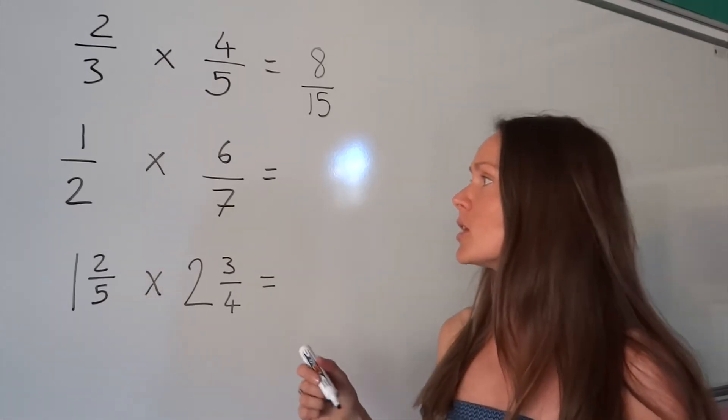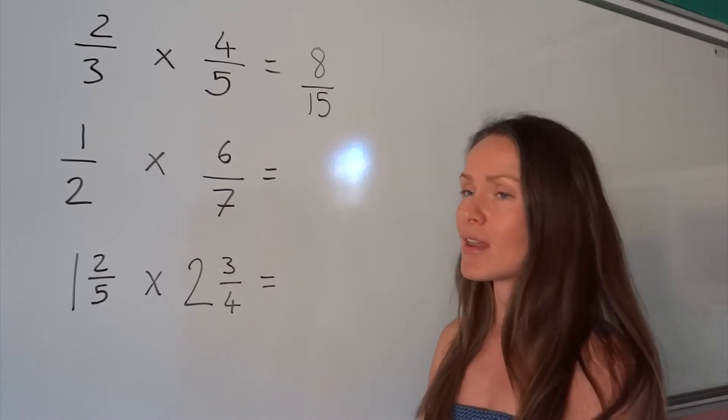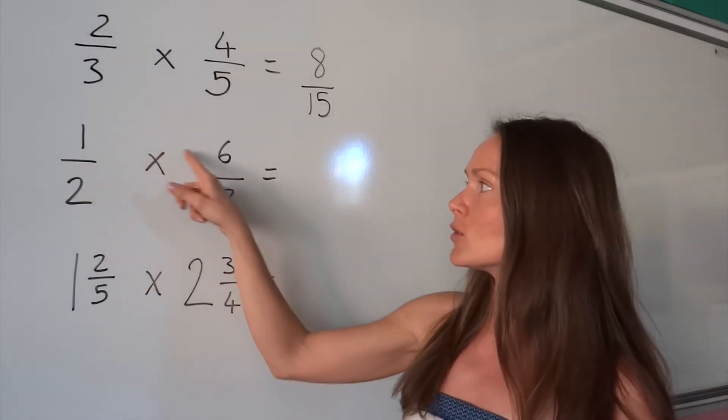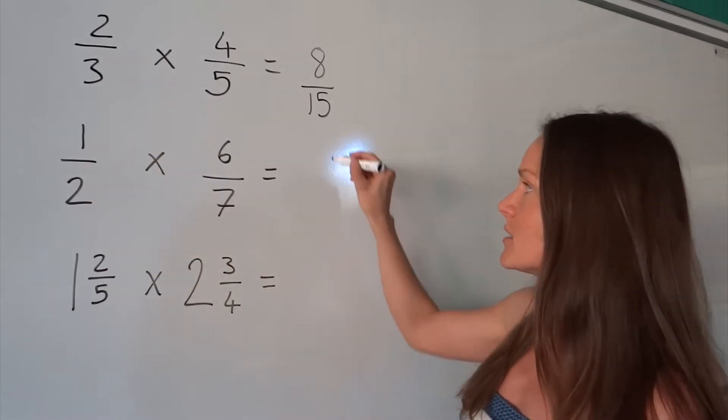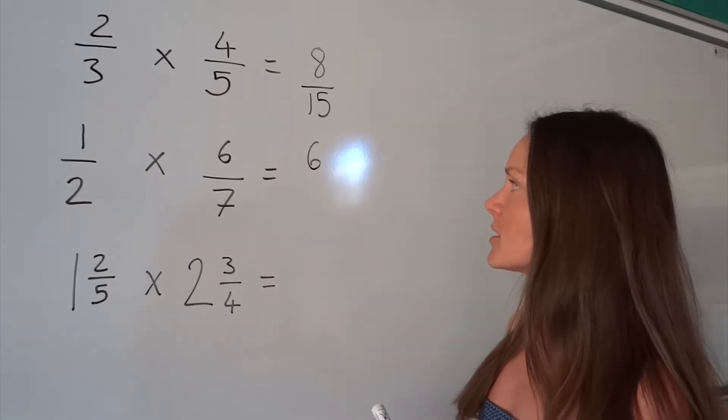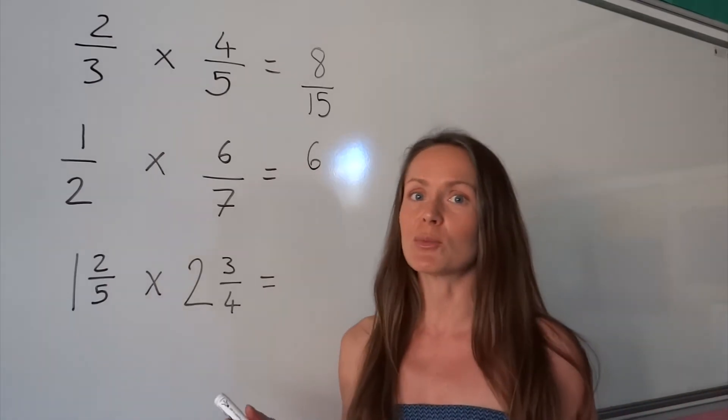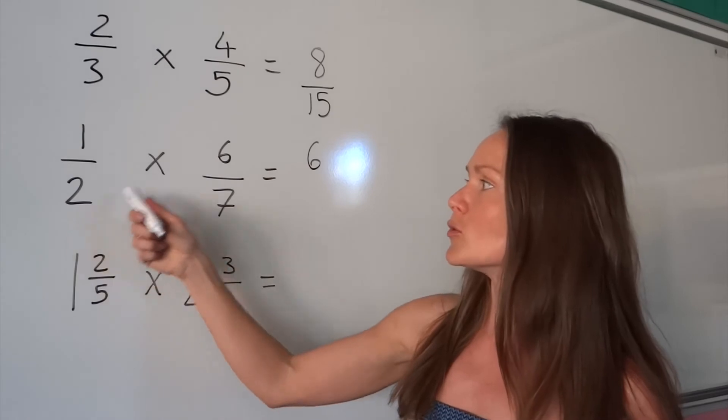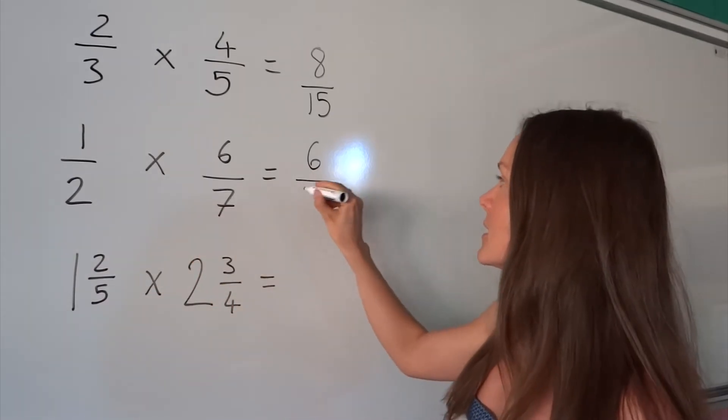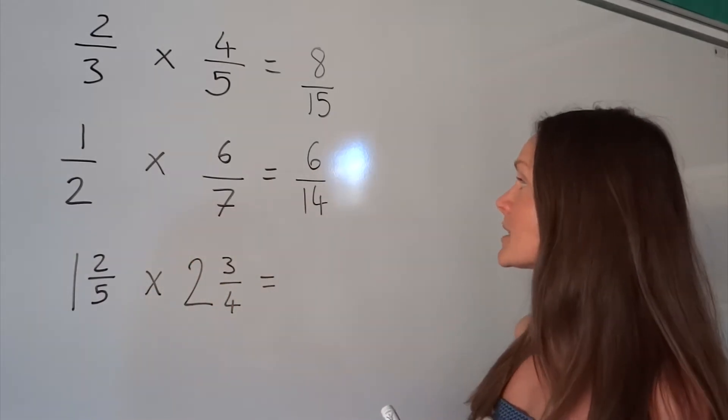Now, in example number 2, I'm going to do exactly the same thing. I'm going to multiply the top two numbers together, the numerators, to find the numerator in our answer. And I'm going to multiply the denominators. So 2 multiplied by 7 is 14. So that's our answer.